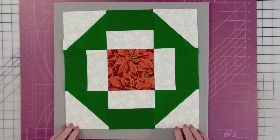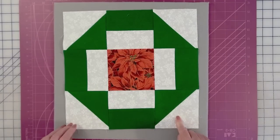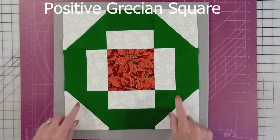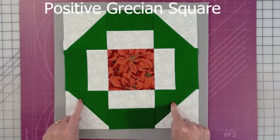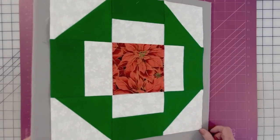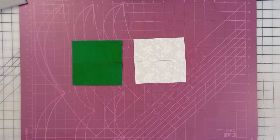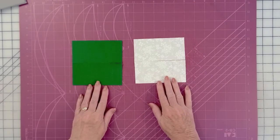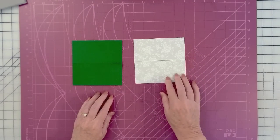Step one for this quilt is to make block number one, which is a Grecian square, and this is the positive version of the Grecian square. I say that this is charm pack friendly, because all of the pieces of this block can be made with five inch charms.